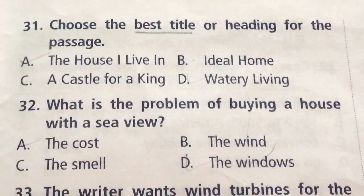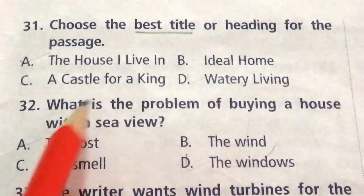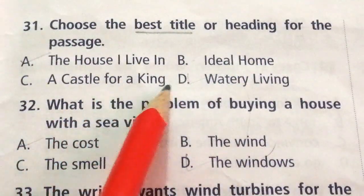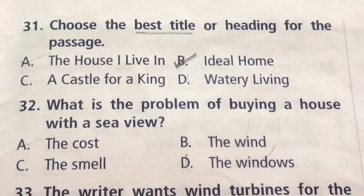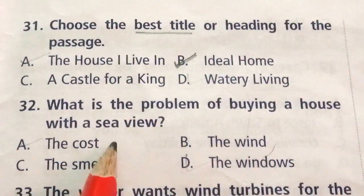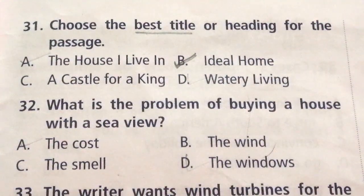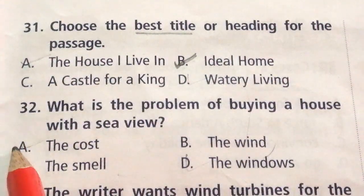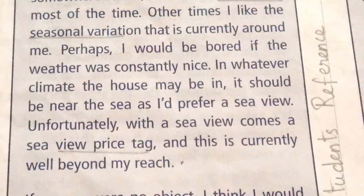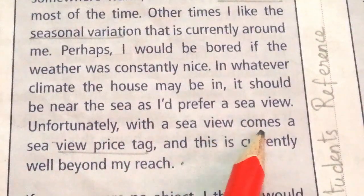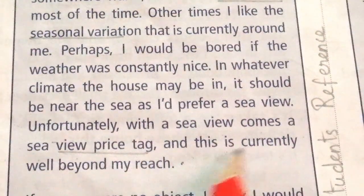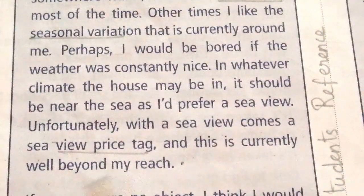Question 31: Choose the best title or heading for the passage. Options: The house I live in, Ideal home, A castle for a king, Watery Living. The answer is B: Ideal home. Question 32: What is the problem of buying a house with a sea view? Options: The cost, The wind, The smell, The windows. The answer is A: The cost. The answer is given in the first paragraph: unfortunately with a sea view comes a sea view price tag, and this is currently well beyond my reach.